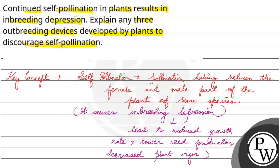It means that there is no genetic variation, so there is decreased fitness in the plant. There is also an increase in homozygosity — no heterozygous formation takes place, and loss of heterozygosity occurs. So in this case, many plants have developed outbreeding devices — mechanisms to avoid self-pollination. This is a plant's own mechanism; they are designed in such a way to prevent self-pollination.